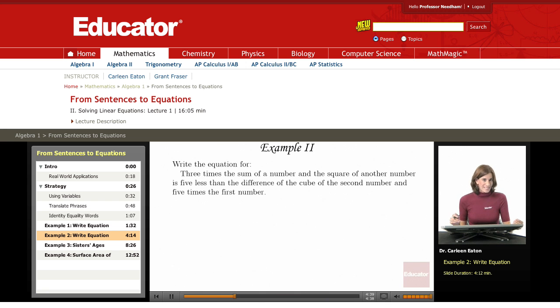I have to assign variables to unknowns, and in this case there's actually two unknowns. It says the sum of a number and the square of another number, so there's actually two numbers. I'm going to let the first number be called x. That's a number. And then another number tells me there's a second number, which I'm going to represent as y.